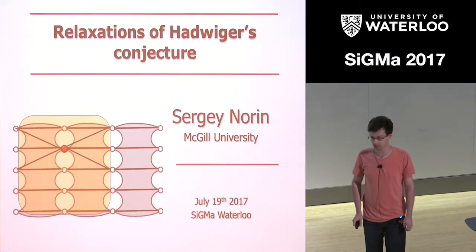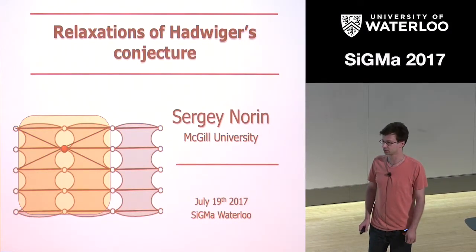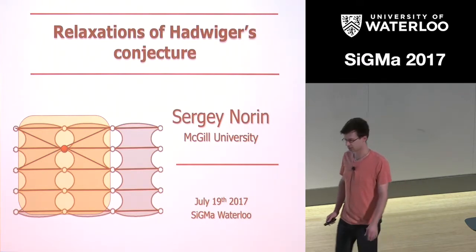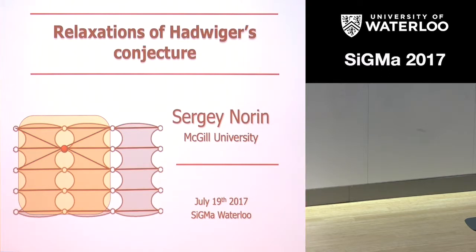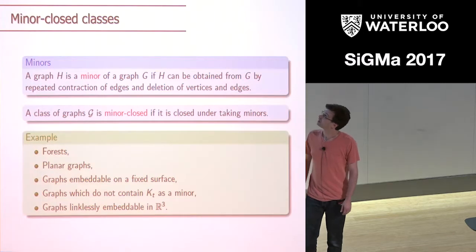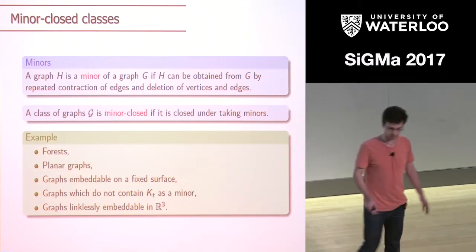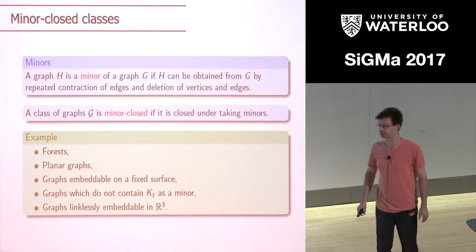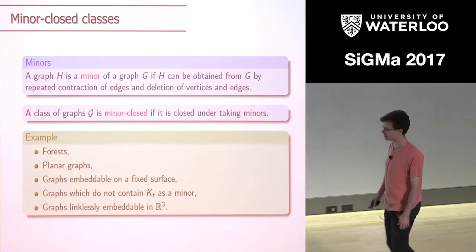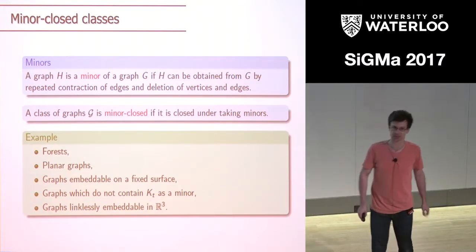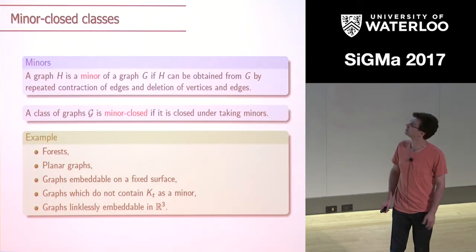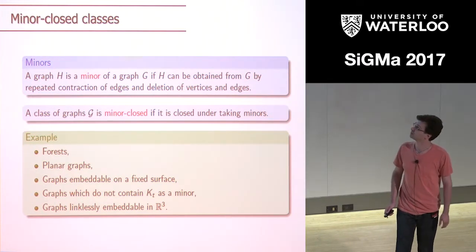I'm going to be talking about a number of recent results on coloring of minor-closed classes of graphs, which are all motivated and connected to Hadwiger's conjecture. I really want to focus on thinking of coloring minor-closed classes of graphs rather than coloring individual graphs in them, which is a subtle distinction that will allow us to make certain statements prettier.